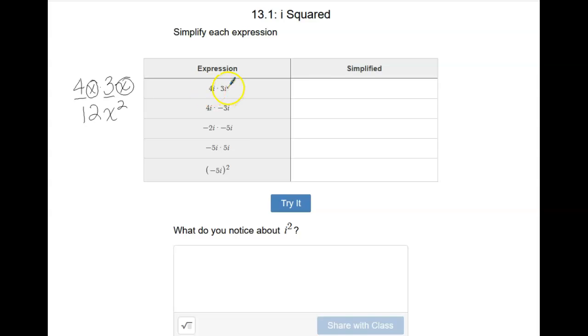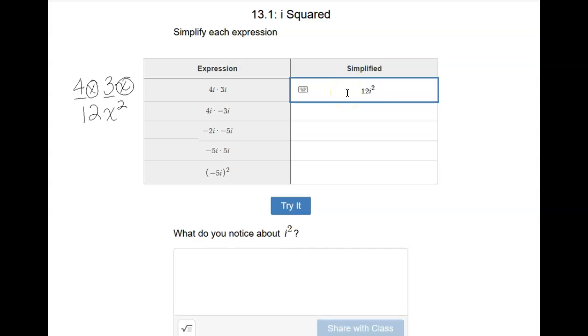When we multiply 4 and 3 together, we get 12, and when we multiply i times i, we get i squared. So I'm going to type this in here, and we would have 12i squared.